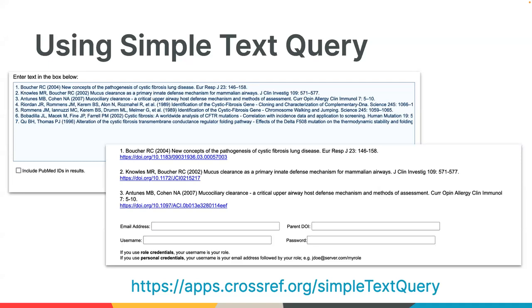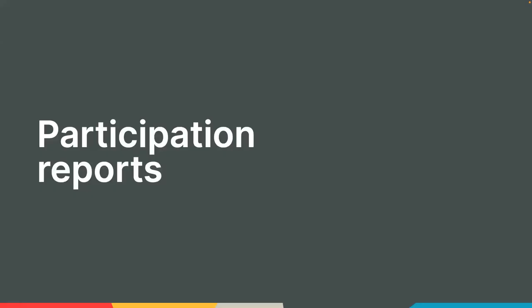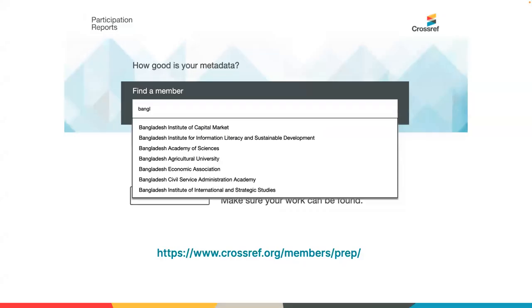I'm going to hand back to Rosa, and she is going to talk about our participation reports, which is one of the tools to help our members learn more about their metadata. Thank you, Susan. Members aren't always sure what metadata they have sent to us, especially if there are multiple people at an organization registering content. The participation reports tool helps members better understand what they have registered with us. The aim is to help members identify areas where they can improve upon the metadata they send to Crossref.